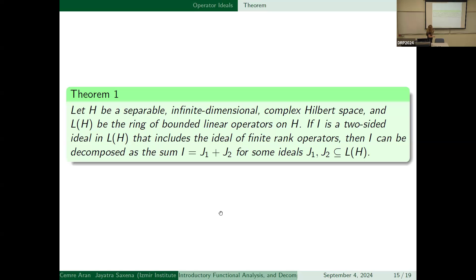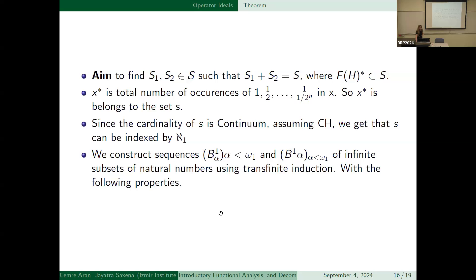And this is our main theorem. Let H be a separable infinite dimensional Hilbert space and L(H) the ring of the bounded linear operators on H. If I is a two-sided ideal in L(H) that includes finite operators, then it can be decomposed as I is equal to J_1 plus J_2 for some ideals that are subsets of L(H). We will write the sketch of the proof and I will mention about it, but not the original proof. If you want to look at the proof, it is in the report.